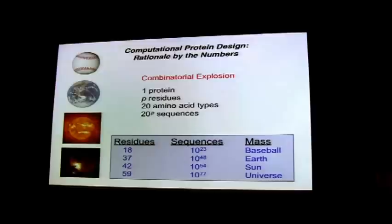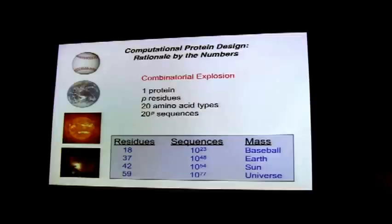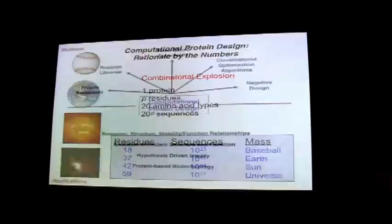For an 18 amino acid peptide, there are 10^23 unique sequences. If we chemically synthesized one strand of each of the 10^23 possible sequences, it would be about the mass of a baseball — which is almost tractable. But even for still very small proteins, you're at the mass of the universe in terms of building a combinatorial library that fully expresses that combinatorial diversity. Computationally, however, we can address these numbers quite easily.